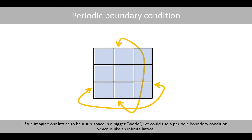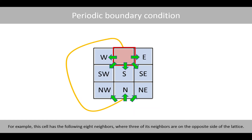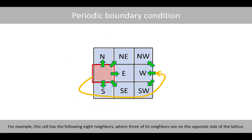If we imagine our lattice to be a subspace in the bigger world, we could use a periodic boundary condition, which is like an infinite lattice. A periodic boundary condition means that the cell at the edge of the lattice has a neighbor at the opposite side. For example, this cell has the following eight neighbors, where three of its neighbors are on the opposite side of the lattice. The same is also true for this cell, where its three neighbors to the left are on the opposite side of the lattice.